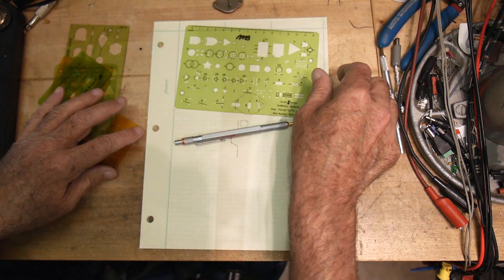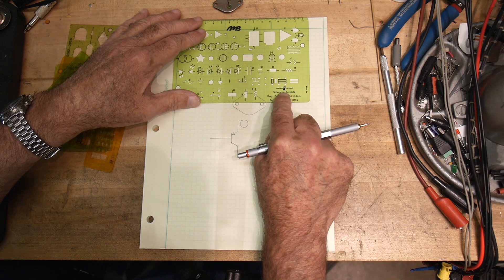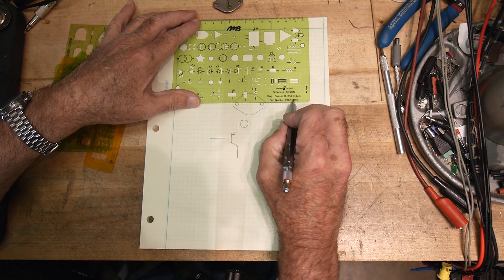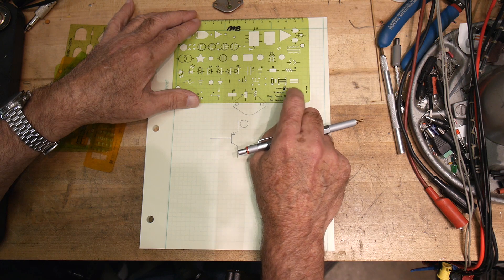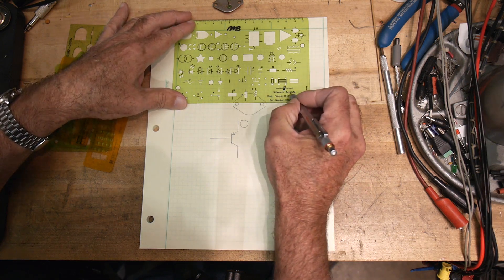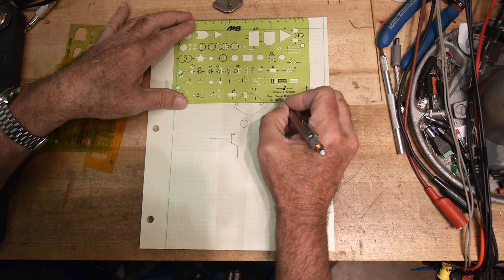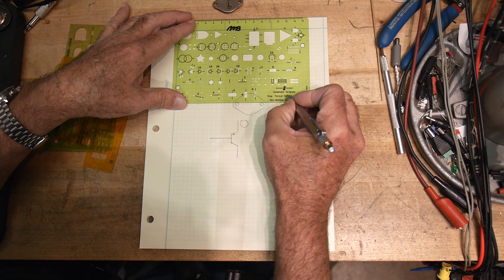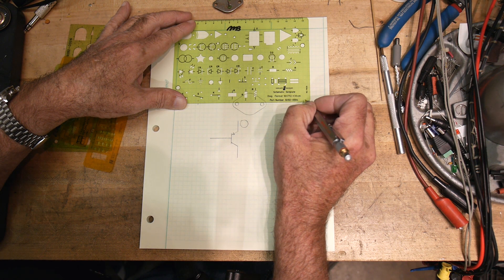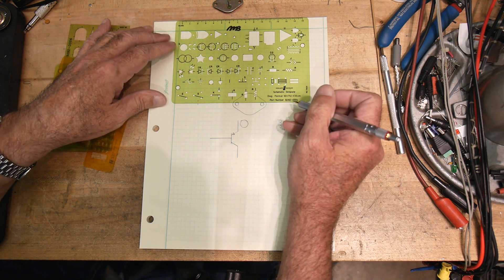All right. What's this one? This one says Hewlett Packard on it. It's got the old logo. Part number. It has an HP part number, so you could go down and order this one. Schematic template. Drawing format 50, parentheses, 75 by 33 centimeters. I don't know what that means.